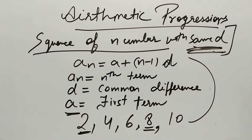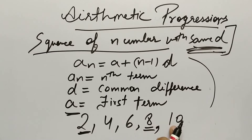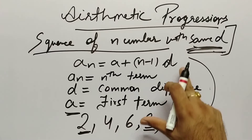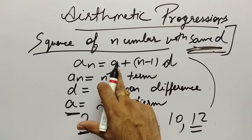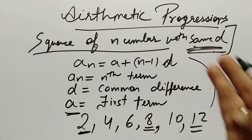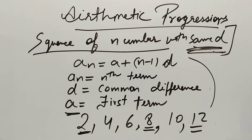For example, if I ask you the 6th term, you can easily count: 1, 2, 3, 4, 5, 6 — and you get 12. But if I ask you the 50th term, it becomes difficult. You could go 12, 14, 16, 18 and keep going, but that is not efficient.